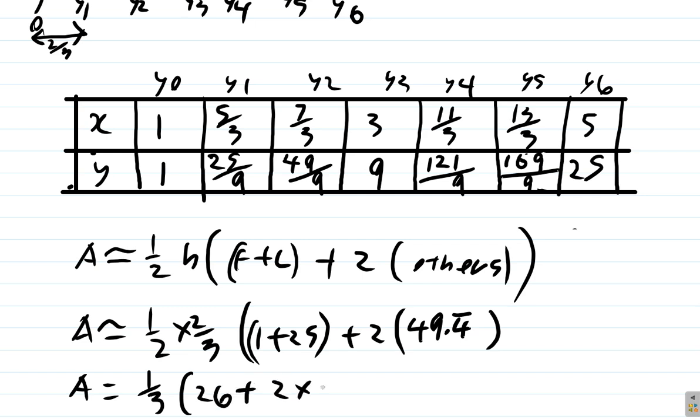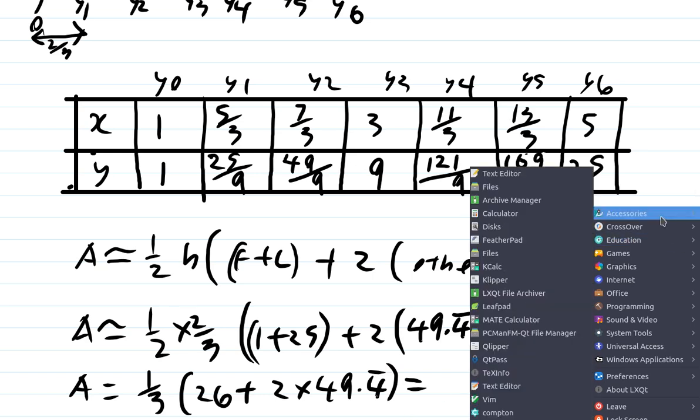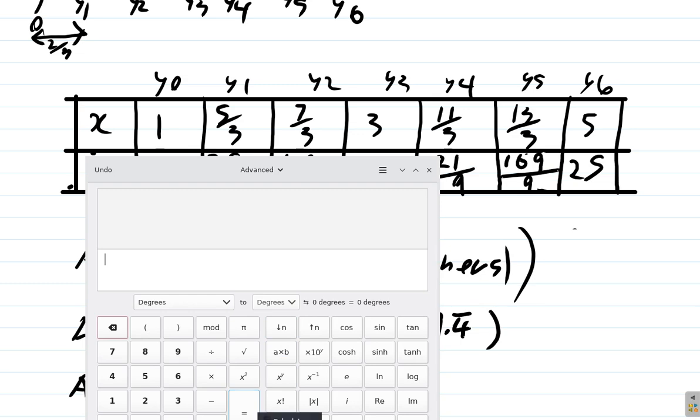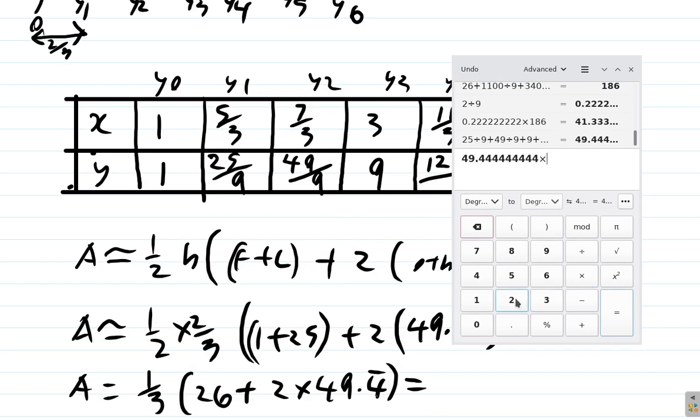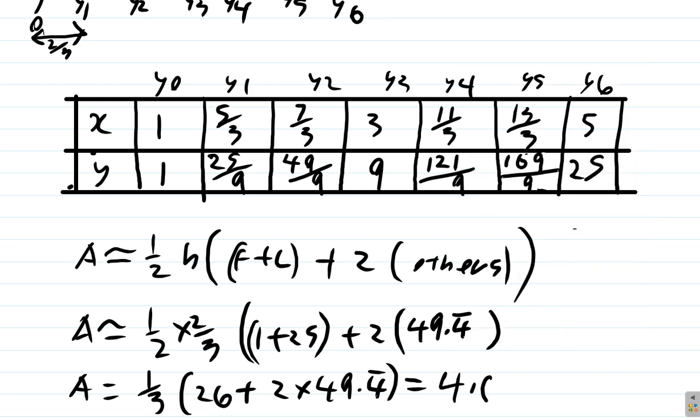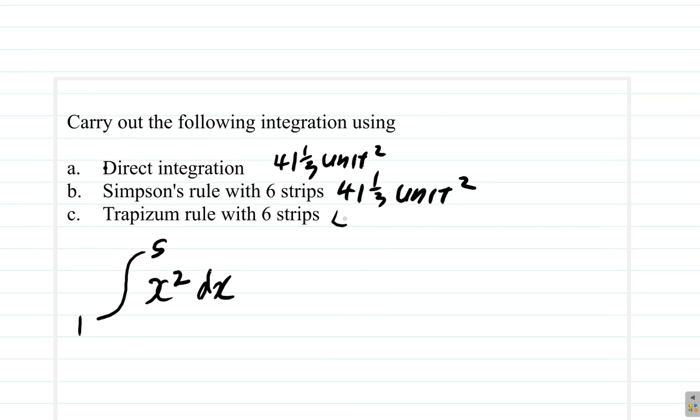What we have is that the area is - when you have half by 2 thirds you get 1 third - and this is 25 plus 1 is 26, plus 2 times 49.4 repeating. Times 2 plus 26 times 1 third equals 41.63. So we have 41.63, quite close.